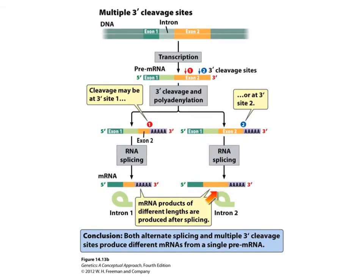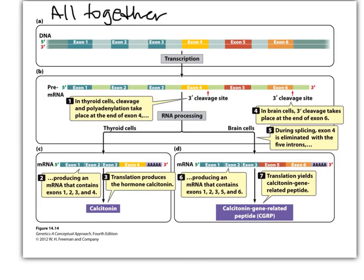If we use cleavage site number two, we cleave there, polyadenylate, splice out the intron, and leave both exon 1 and exon 2 — but now exon 2 is much bigger, coding for more amino acids. The shared region gives the same sequence of amino acids, but the additional region adds extra amino acids, making the primary structure a little different — different secondary, tertiary structure, possibly different protein function. Depending on cell type, we cleave at one site or the other depending on which protein function is needed.